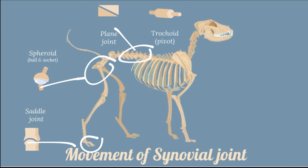Next is the trochoid joint, or pivot joint, in which rotary movement occurs around one axis. An example is the atlantoaxial joint.